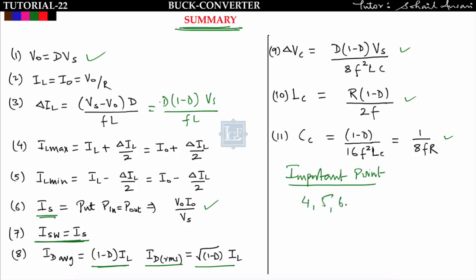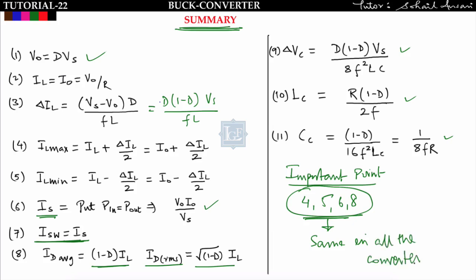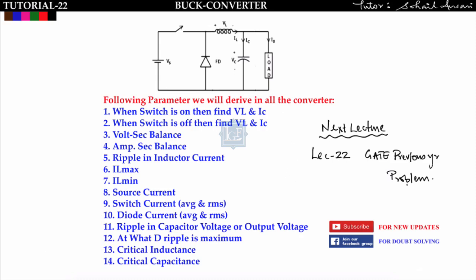Parameters 4, 5, 6, and 8 are common across all converters — buck, boost, and buck-boost. In the next lecture we will solve previous year GATE exam problems on the buck converter from 1991 to 2017. Please like the video and subscribe to the channel for doubt solving.